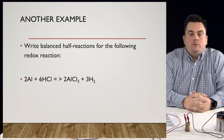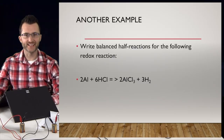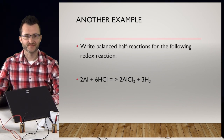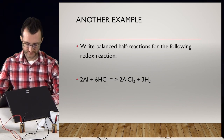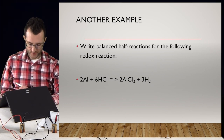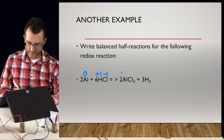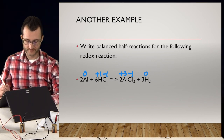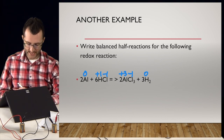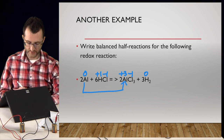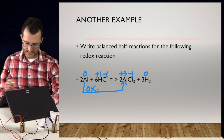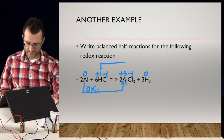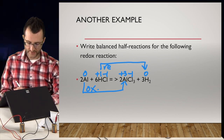Another example: write balanced half-reactions for the following redox reaction. Al is zero, H is plus one, Cl is minus one on the left. On the right, Al is plus three in the compound, Cl is minus one, and H2 is an element so it's zero. Al is changing from zero to plus three — charge is going up, that is oxidation. H is going from plus one to zero — going down, so that is reduction.